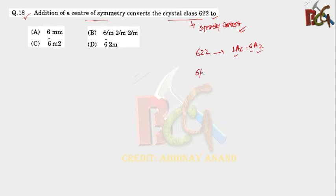So let's see the 6222. Its symmetry content is 1A6 and 6A2. It means it has one 6-fold axis and six 2-fold rotation axes. Now, when you see the symmetry content of 6/m 2/m 2/m, it is 1A6, 6A2, and 7M. And center of symmetry is represented by i or bar 1. So if we add one additional center of symmetry and mirror plane into the 6222, it will become 6/m 2/m 2/m.